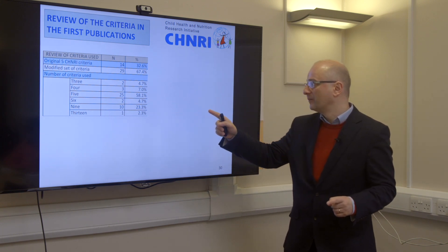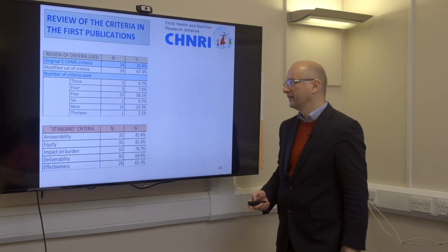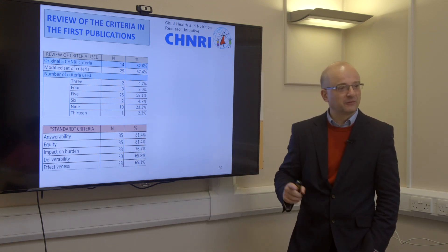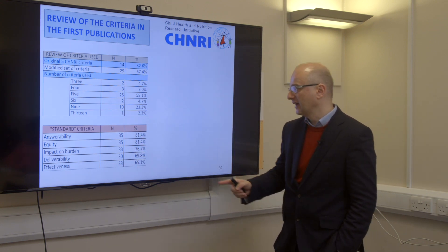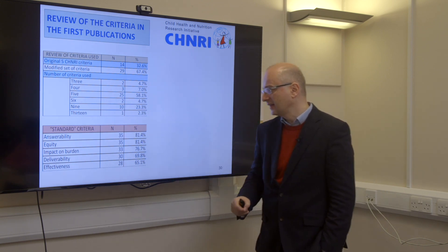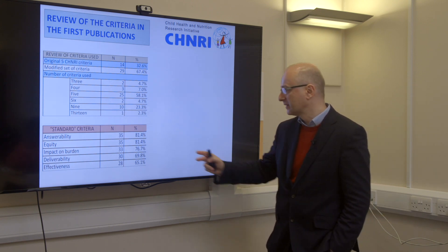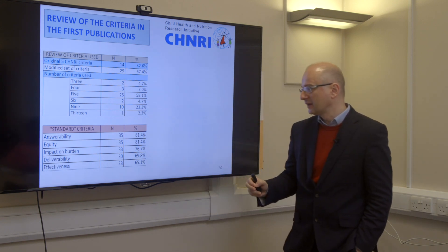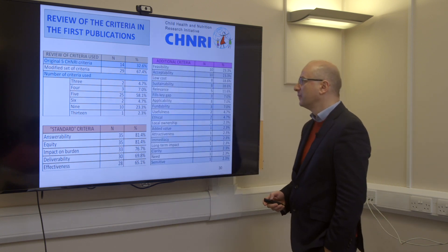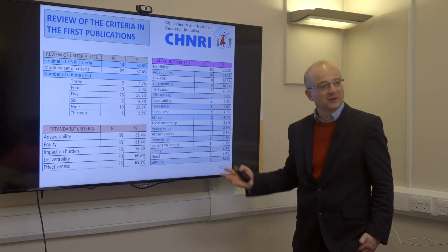So what does the CHNRI do? It measures — really measures — a collective optimism of many researchers towards each proposed idea within an agreed context and using agreed criteria. A large number of health research options receive their intermediate and overall priority scores, which are all quantitative and range from 0 to 100. Advantages and disadvantages of each research idea become transparent, scores are intuitive, and the result is democratic, replicable, and easy to understand.